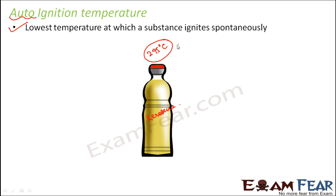Suppose there is no external ignition source — no matchstick, nothing. But if you start heating kerosene such that it reaches a temperature of 295 degrees Celsius, then it will automatically get ignited and catch fire on its own. That is why this temperature is called auto-ignition temperature.